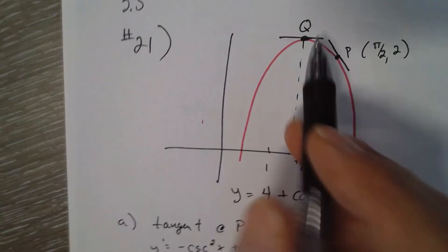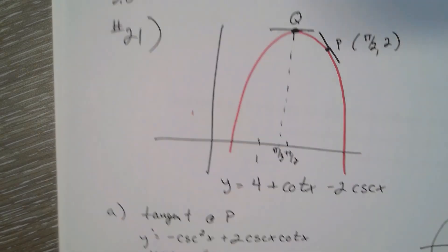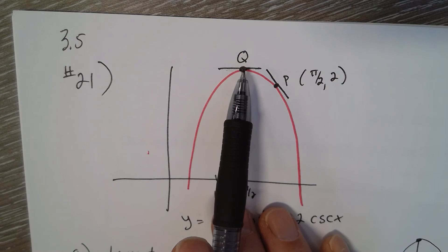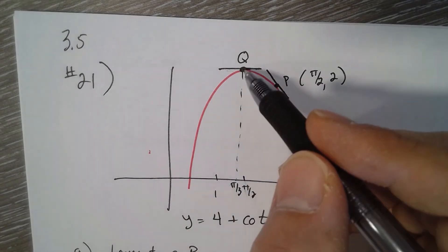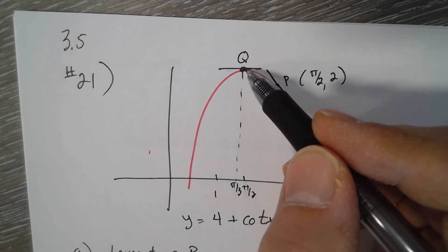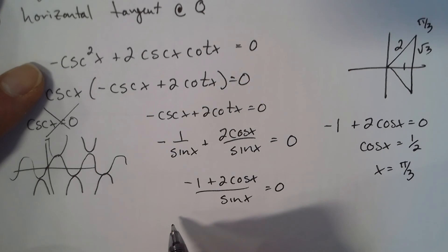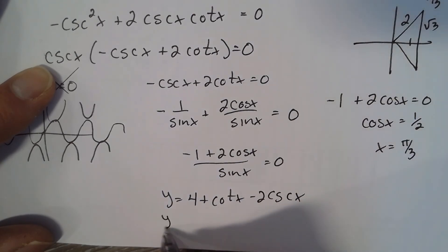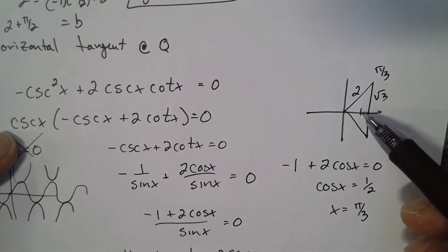The horizontal tangent occurs at x = π/3. Since it's a horizontal line, we just need the y-value there. We plug x = π/3 into the original equation y = 4 + cot x - 2 csc x. So y(π/3) = 4 + cot(π/3) - 2 csc(π/3). The cotangent of π/3 is 1 over √3.